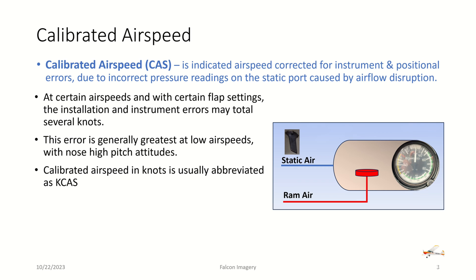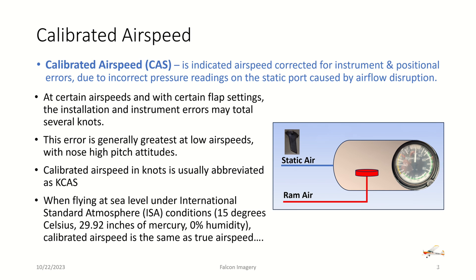Calibrated airspeed in knots is usually abbreviated KCAS. When flying at sea level under international standard atmosphere conditions — such as 15 degrees Celsius, 29.92 inches of mercury, and 0% humidity — calibrated airspeed is the same as true airspeed, which we'll get to next. And if there's no wind, it's also the same as ground speed, which we'll also cover.